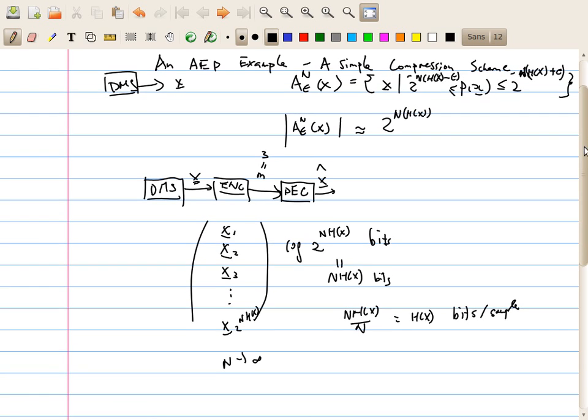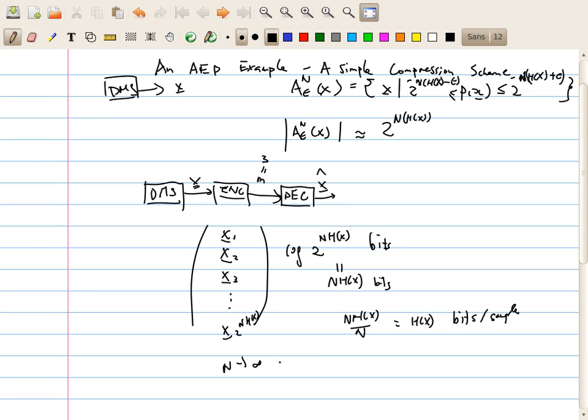We will look into some more practical schemes later on, but at least this is a very interesting scheme, and it also provides another evidence that the amount of information for discrete memory source should be at least less than or equal to H(x). Because given this scheme, we know that if we take n goes to infinity, we can find a scheme such that we only need H(x) bits per sample to represent the source. Therefore, the minimum number of bits needed to represent a sample will be less than this H(x) here. And of course,